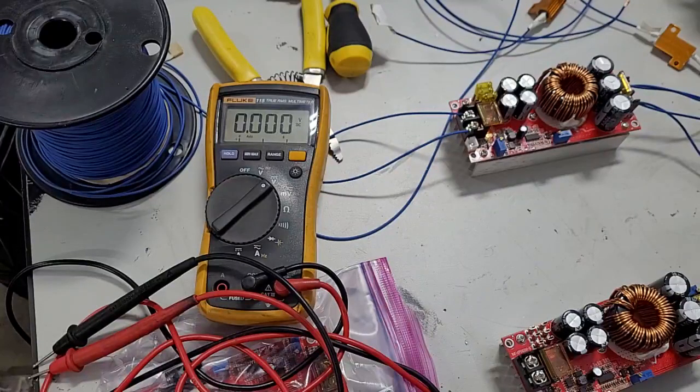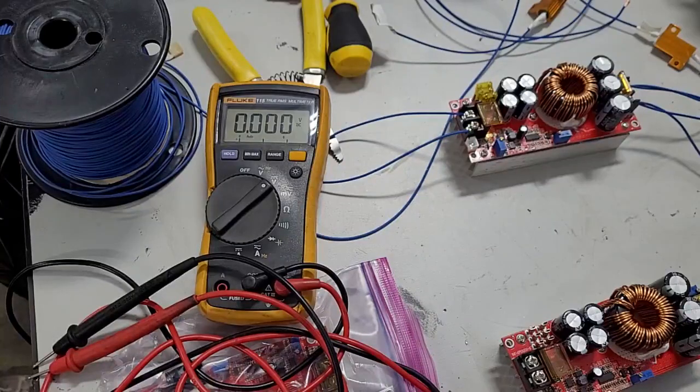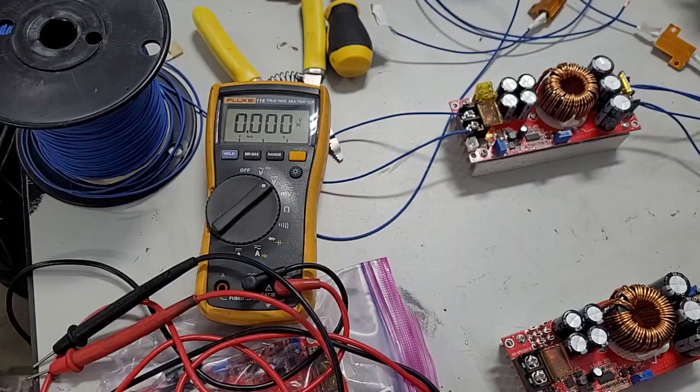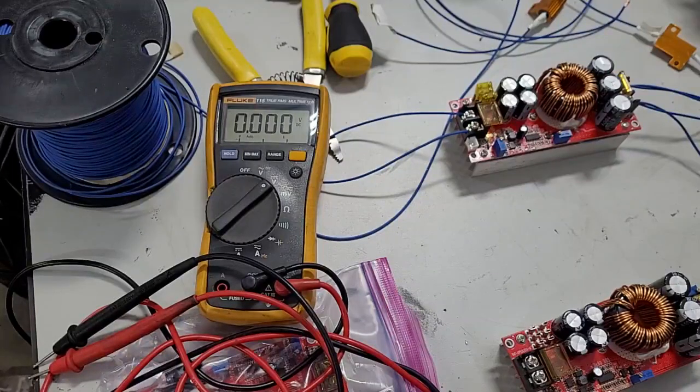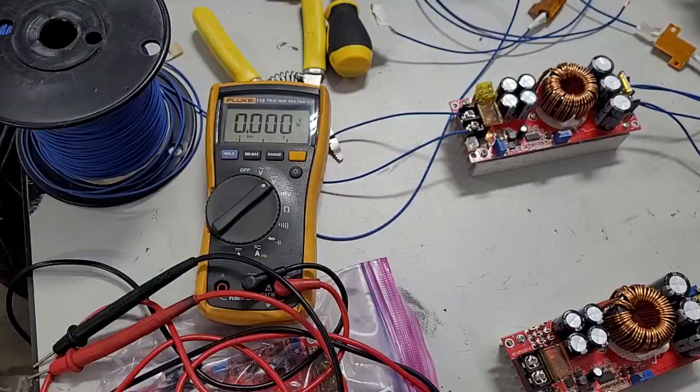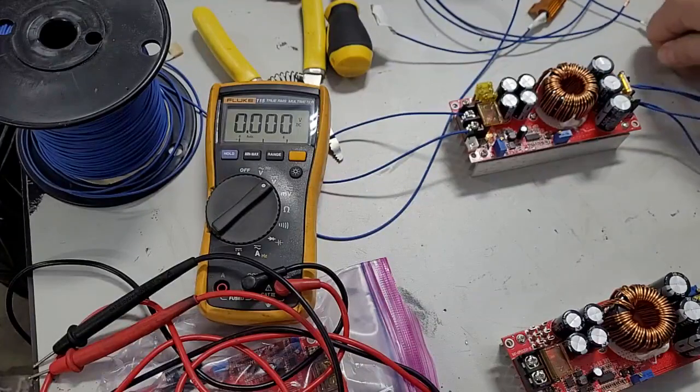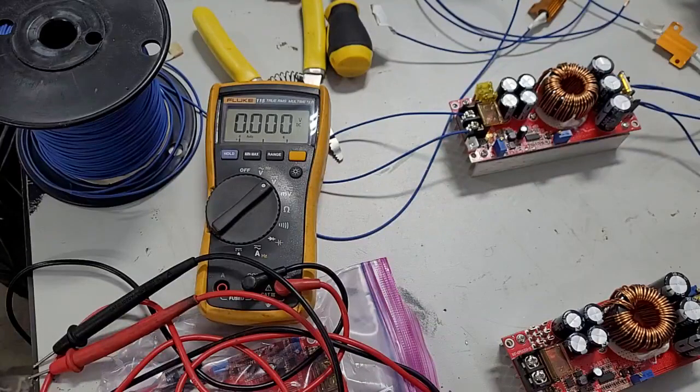Car batteries do this. Everyone's familiar when you crank your car how it sags, you know, when you hit the starter. Whereas like a lithium battery, they turn over quicker, they don't sag as much, so you get more voltage to the starter. So anyway, these aren't super stiff, but we can probably make it work.